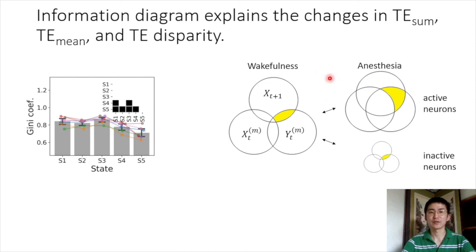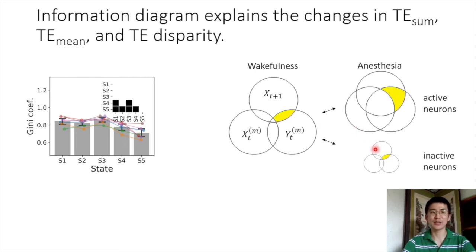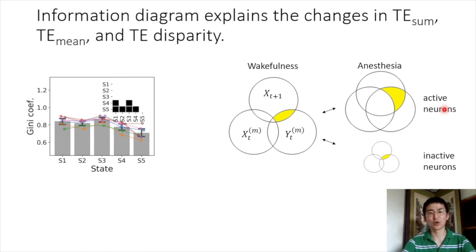This can be explained by the information diagram, where each circle represents the amount of information. The yellow area represents shared information between X(t+1) and Y(t) given X(t) — the definition of transfer entropy. Anesthesia reduces spike rate and many neurons become inactive or silent; for inactive neurons, shared information is negligible. For active neurons, because they have bursting spike patterns and are synchronous with each other, transfer entropy is high. This explains why total TE is low in anesthesia while mean TE and disparity are relatively higher than in the wakefulness state.